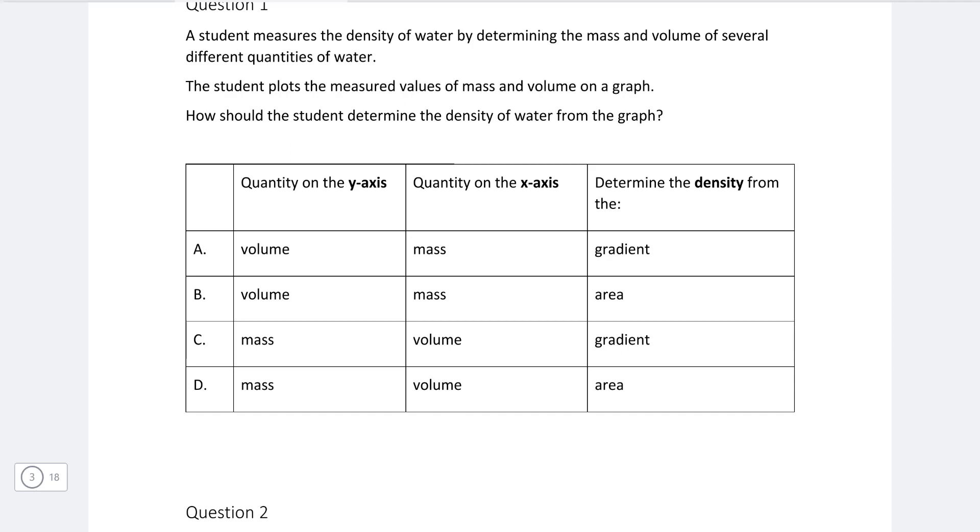So we're looking for density, often given this symbol here, the Greek letter rho. This is defined as mass over volume. This means that if I had a graph with mass on the y-axis and volume on the x-axis, then the gradient of that graph will be defined as change in mass divided by change in volume, and this will be equal to the density. So the correct answer is C.